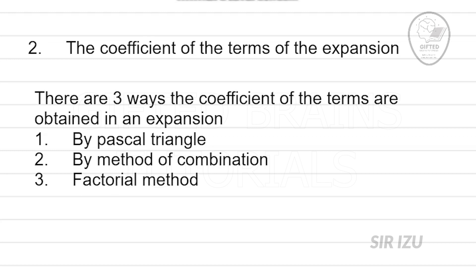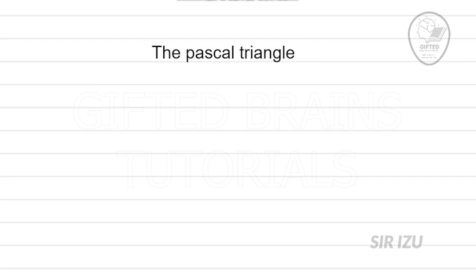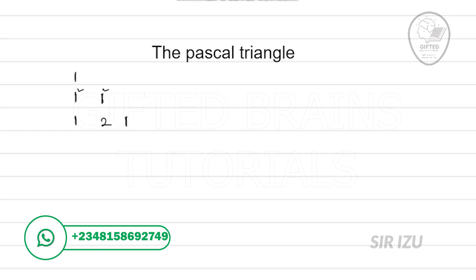Let's talk about Pascal's triangle. Take note of the pattern. We have 1 at the top. Then we have 1 and 1. Every expansion begins with 1 and ends with 1. For the next row, it begins with 1 and ends with 1, and the middle value is obtained by adding the two numbers above it: 1 plus 1 gives 2.